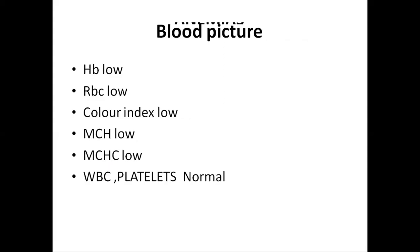The blood picture in iron deficiency anemia: there will be low hemoglobin level, low RBC count, and color index will be low. Color index is the percentage of hemoglobin divided by RBCs. In the CBC, hemoglobin count will be low, RBC will be low, color index will be low, MCH will be low, and MCHC will be low. But the level of WBC and platelets will be normal.